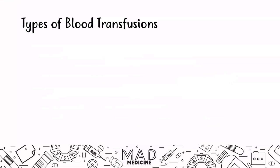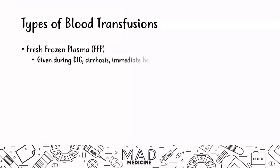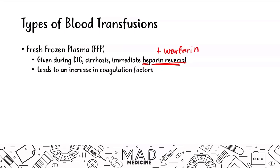The next three types are very important. First is fresh frozen plasma, FFP. FFP is usually given during severe conditions like DIC and cirrhosis, but it can also be given for immediate heparin reversal — this is very important. You can also give it for warfarin reversal. Normally for warfarin you would give vitamin K, but vitamin K takes time to become active. So in that window period, you can give FFP to prevent or reverse the actions of warfarin.